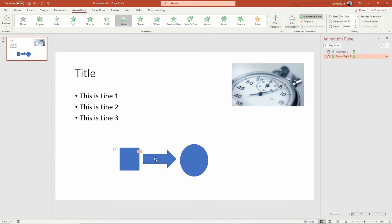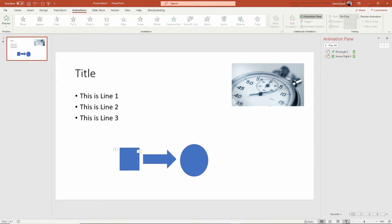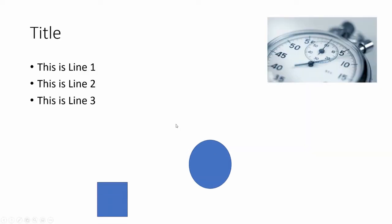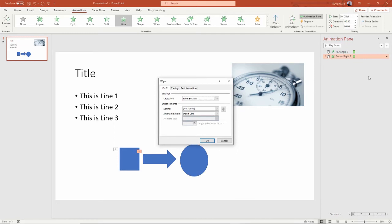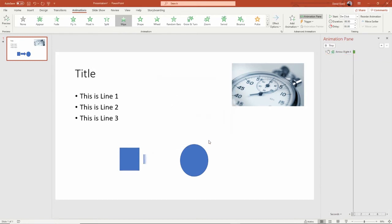The wipe doesn't make sense by default. What I really want is to wipe from left to right, because that's the way the arrow is pointing. I can do that because each animation has effect options. Under effect options, in the case of a wipe, I can set it from the left. I click OK.